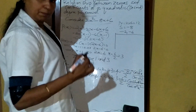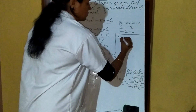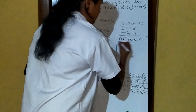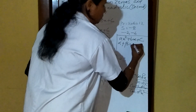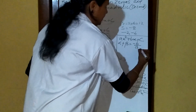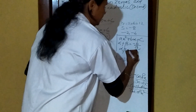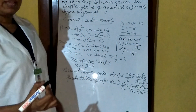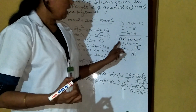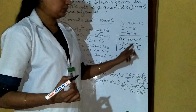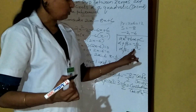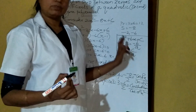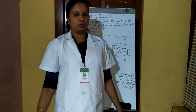In general, for a quadratic polynomial ax² plus bx plus c, alpha plus beta equals minus b by a and alpha times beta equals c by a. This is the relationship between zeros and coefficients of a quadratic polynomial. Thank you.